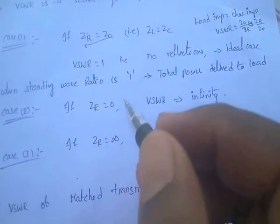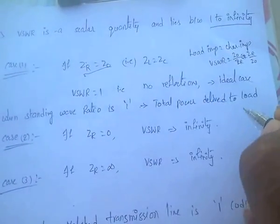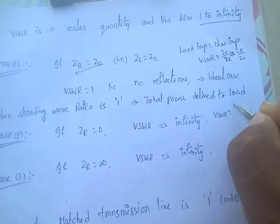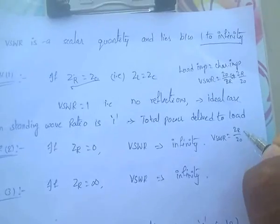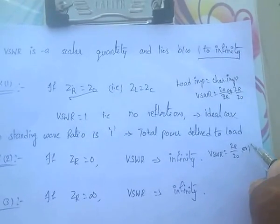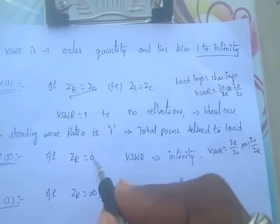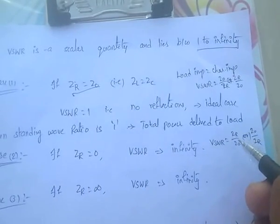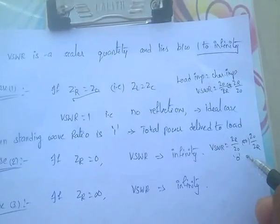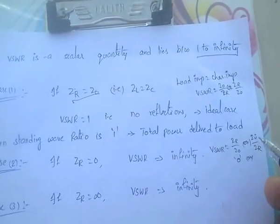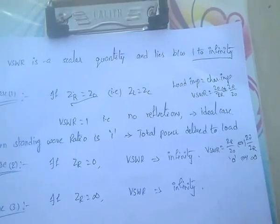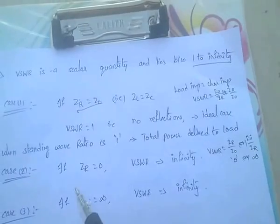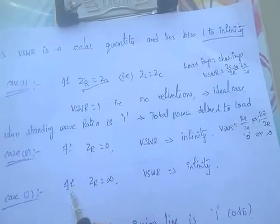In the second case, if ZR equals 0: from ZR by Z0 the value is 0, but from Z0 by ZR the value is 1 by 0, that is infinity. Whichever is greater — infinity is greater — so VSWR is infinity. If ZR equals 0, the VSWR is infinity.